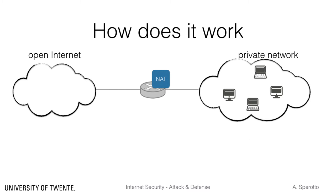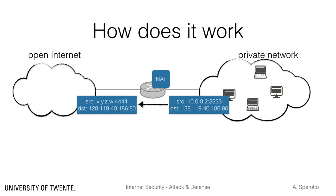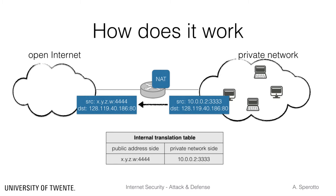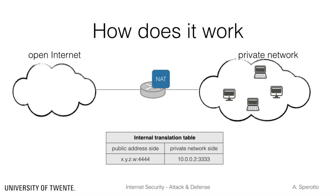To implement this translation, a NAT router needs to take care of three operations. First, to replace the source IP address and source port of each outgoing datagram with its public IP address and a new source port. Second, to keep track of this association in an internal translation table. And third, to replace, for each incoming datagram, its public IP address and destination port with the IP address and port that it has previously stored.